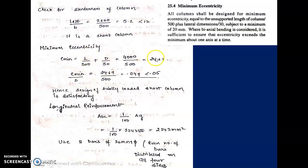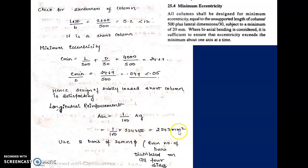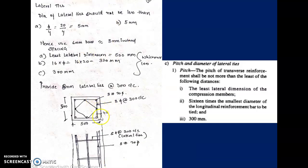The longitudinal reinforcement is 1% of the gross area AG. We have confirmed the column is 500×500, so Ast = 1% of 500×500 = 2500 mm² (approximately 2243 mm² based on the initial gross area estimate). Using 8 bars of 20 mm diameter distributed evenly on all sides provides sufficient area, confirming that 1% steel is adequate and we have our longitudinal bars.